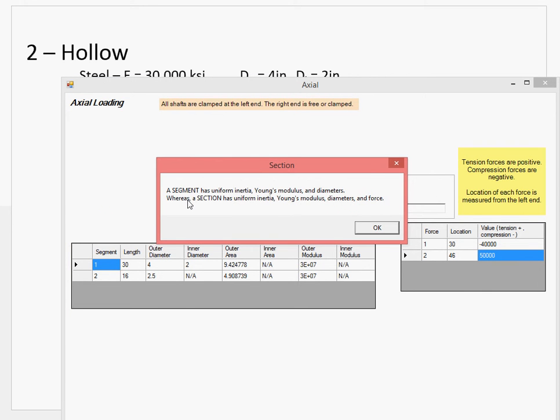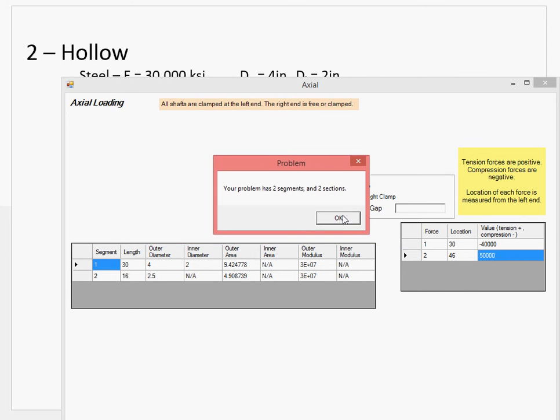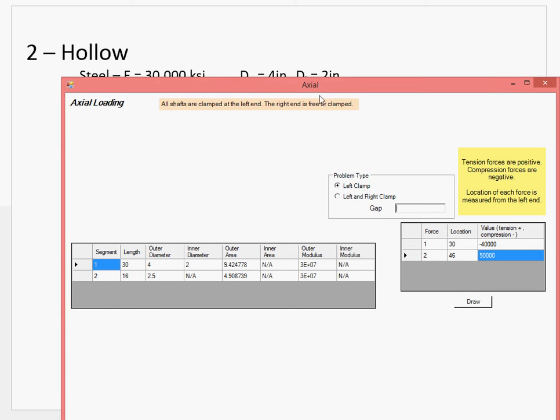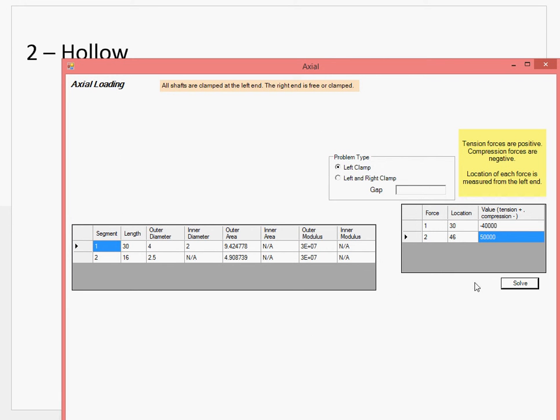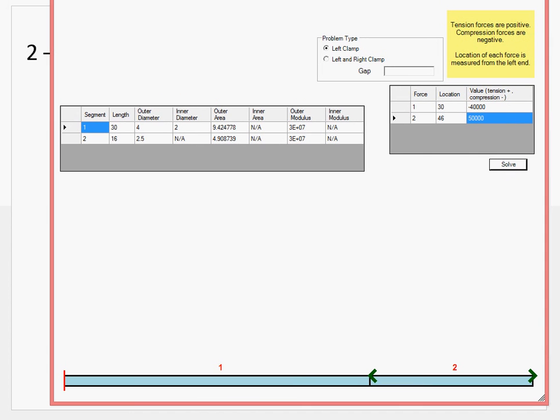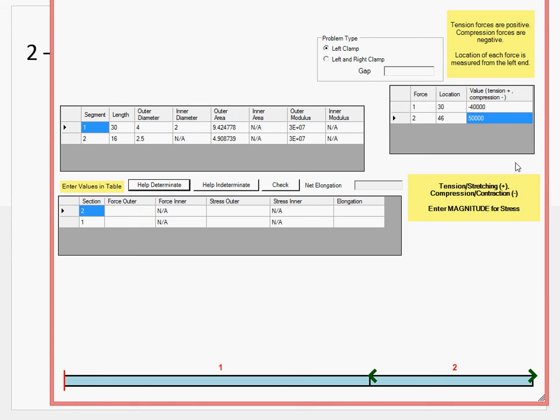This here reminds you of the difference between segments and sections, where sections take into consideration force. Two segments, two sections. That's because all of these changes line up, all at the same time. So we can draw this. And you can see really the placement of the loads.